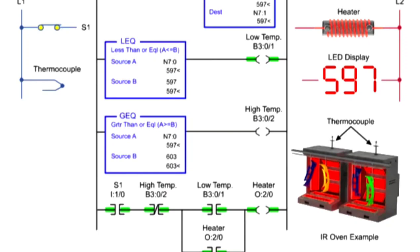In this on-off temperature control example, the heater turns on when the temperature falls to or below 597 degrees, and turns off when the temperature reaches 603 degrees or more.